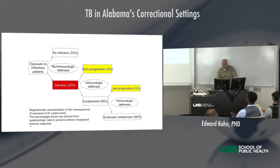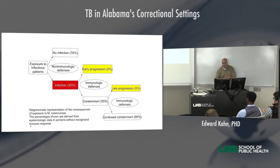Ninety-five percent of people contain the infection. But at some point in about five percent of those people, they're ultimately going to break down with TB. This can happen when somebody's 10 years old or when they're 80 years old, just from the aging and weakening of the immune system that comes with age. That's why we see TB in older people.